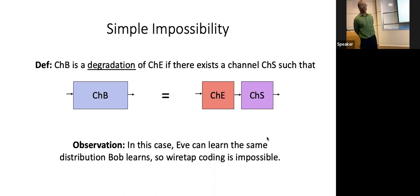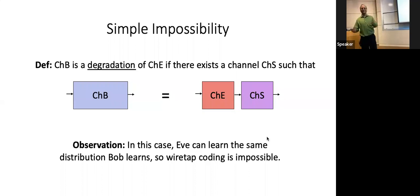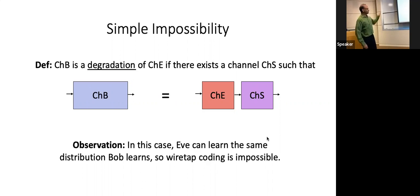So we have a fundamental limit: we can only do wiretap coding if Bob's channel is not a degradation of Eve's channel. This is so obvious it was essentially just observed in the introduction of Wiener's paper.